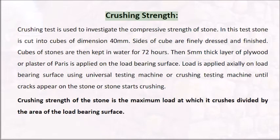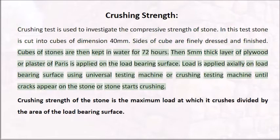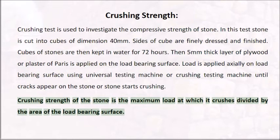Crushing strength test: used to investigate the compressive strength of stone. Stone is cut into cubes of dimension 40 mm; sides of cube are finely dressed and finished. Cubes of stones are then kept in water for 72 hours. Then a 5 mm thick layer of plywood or plaster of Paris is applied on the load bearing surface. Load is applied axially on the load bearing surface using a universal testing machine or crushing testing machine until cracks appear on the stone or stone starts crushing. Crushing strength of the stone is the maximum load at which it crushes divided by the area of the load bearing surface.